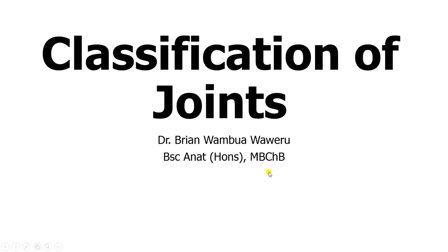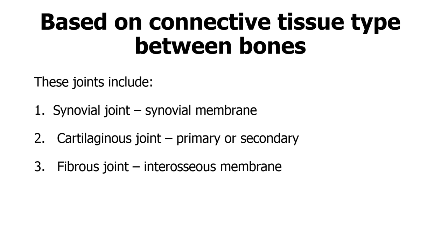Welcome back to my channel. Today we are going to classify the joints in the human body. Joints are usually classified based on the connective tissue between the articulating bones — whether you have cartilage, fibrous tissue, or a synovial lining. There are three types of joints: synovial joints, cartilaginous joints, and fibrous joints. Cartilaginous joints are divided further into primary and secondary.